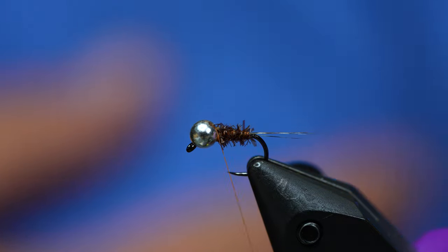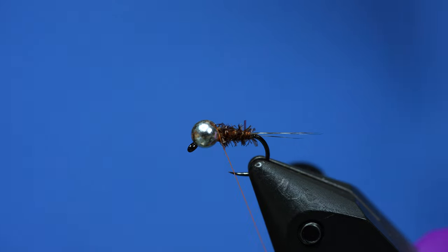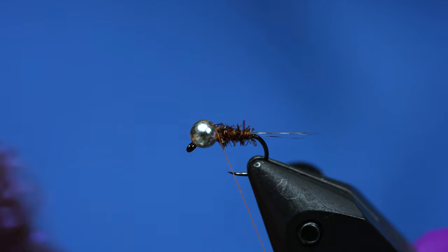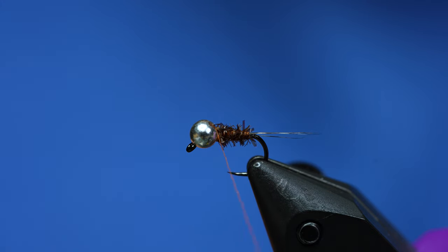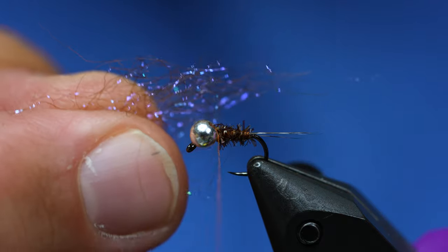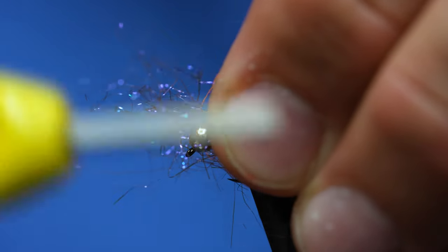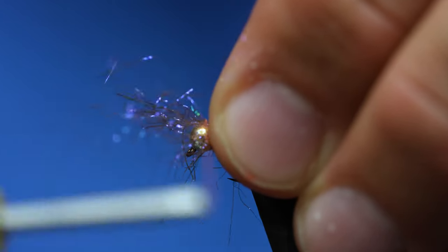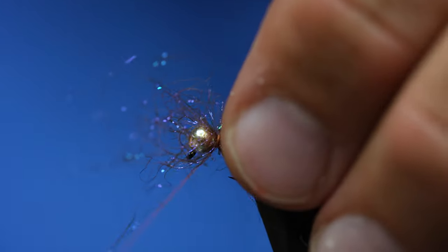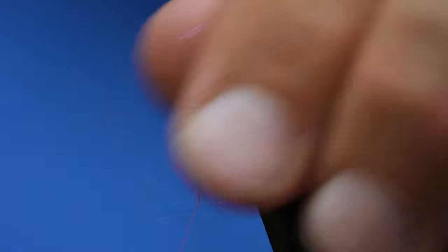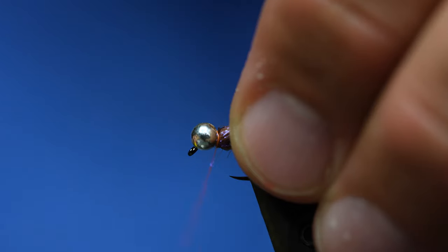The next step here is add a veil. So this is just UV brown ice dub. I'm going to take a little pinch of it about like that and I'm just going to pinch that on top of the fly. Do like two or three loose turns and then cinch it down and then just bring all that stuff back.